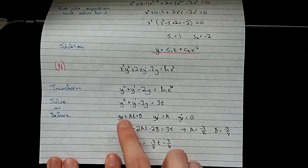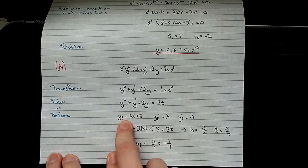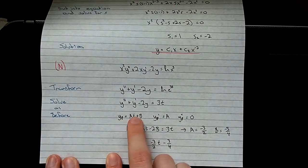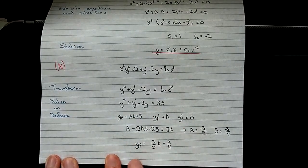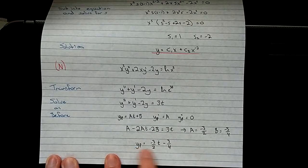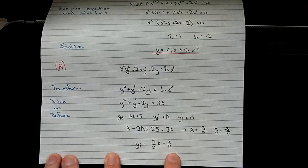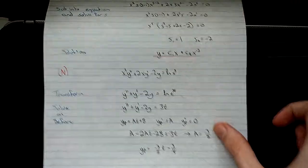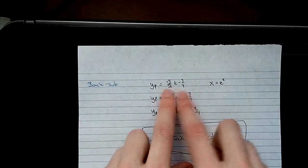So our particular solution here, we're going to do method of undetermined coefficients. We just assume it has that form, take our derivatives, plug it back in, solve it out. You get this for your particular solution: negative 3 halves t minus 3 quarters. Here that is.